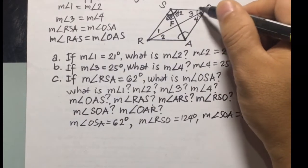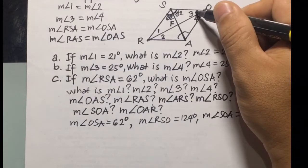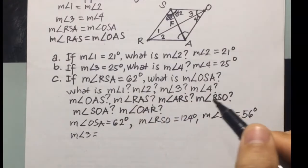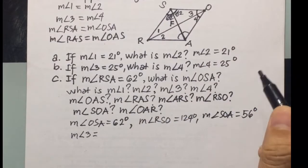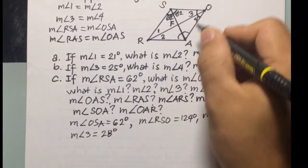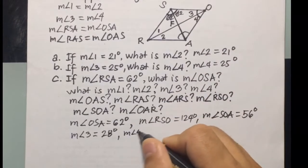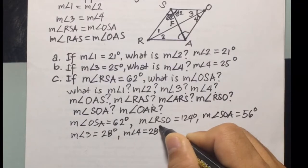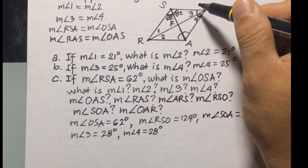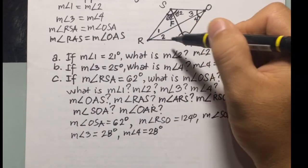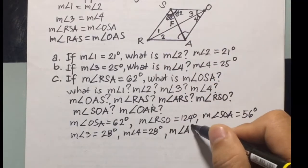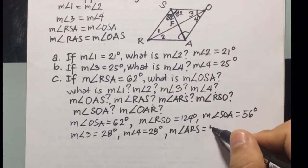Since angle SOA is 56 degrees and it is being divided by 2, the measure of angle 3 equals 56 divided by 2, which is 28 degrees. And since angle SOA is opposite to angle ARS, the measure of angle ARS also equals 56 degrees.